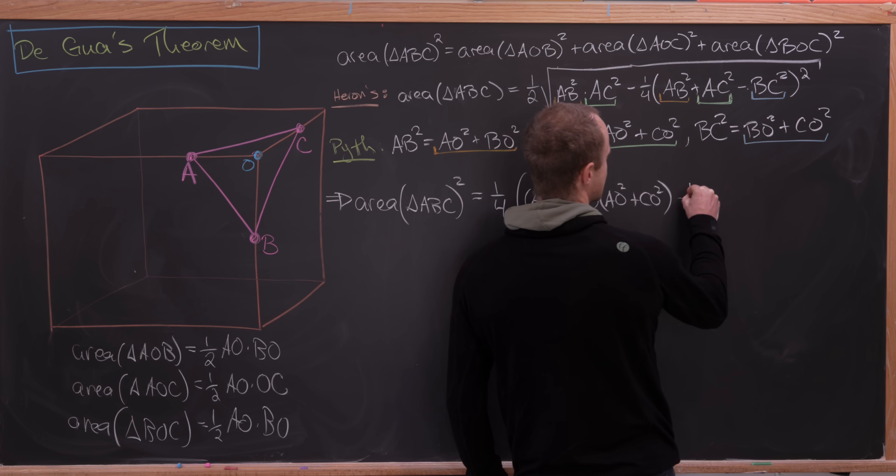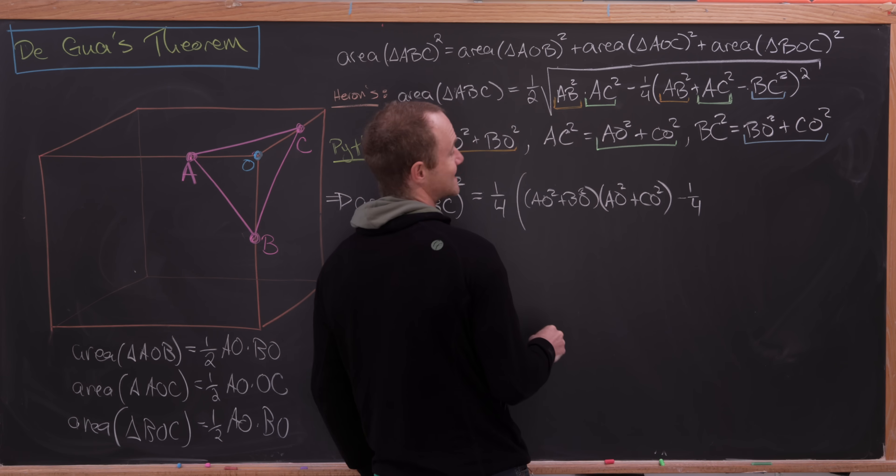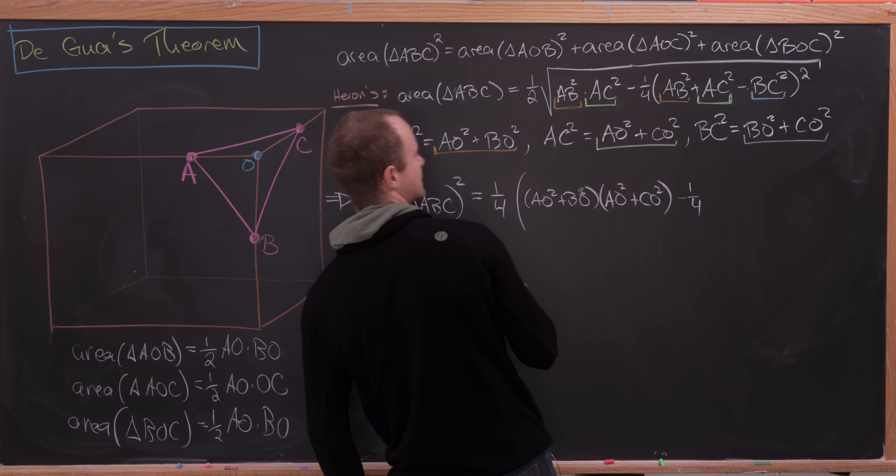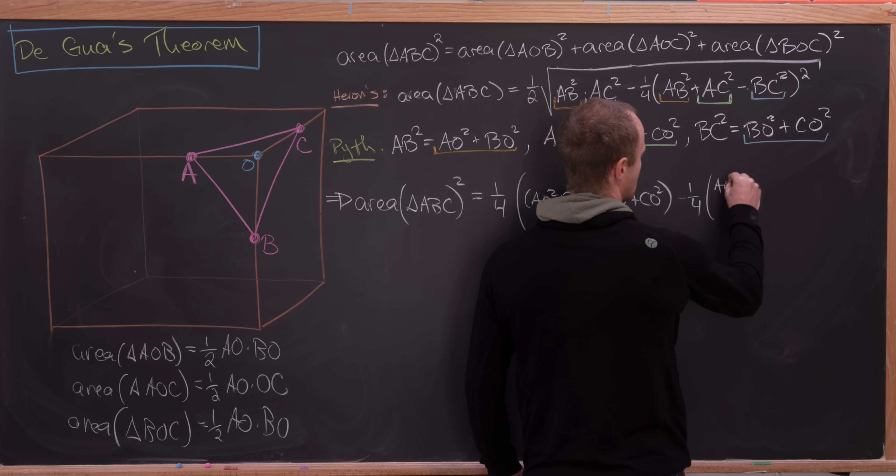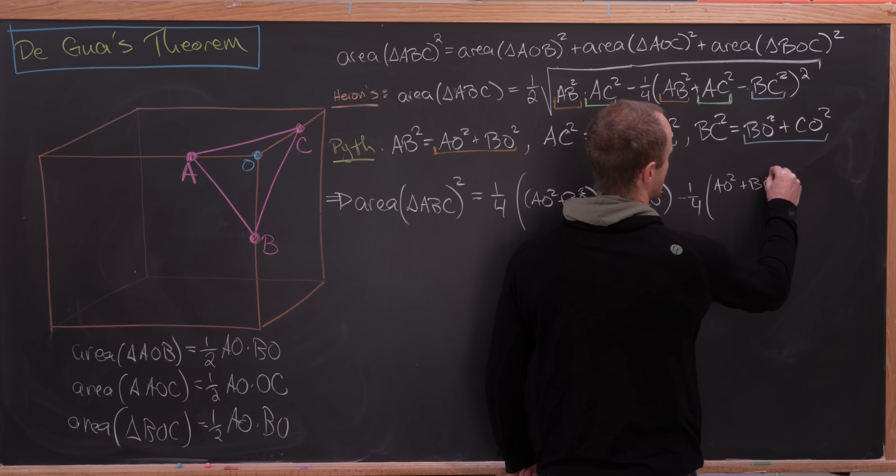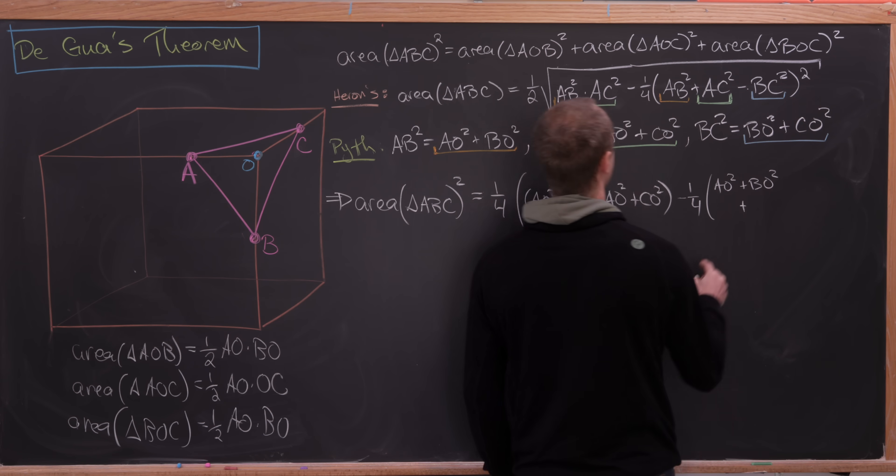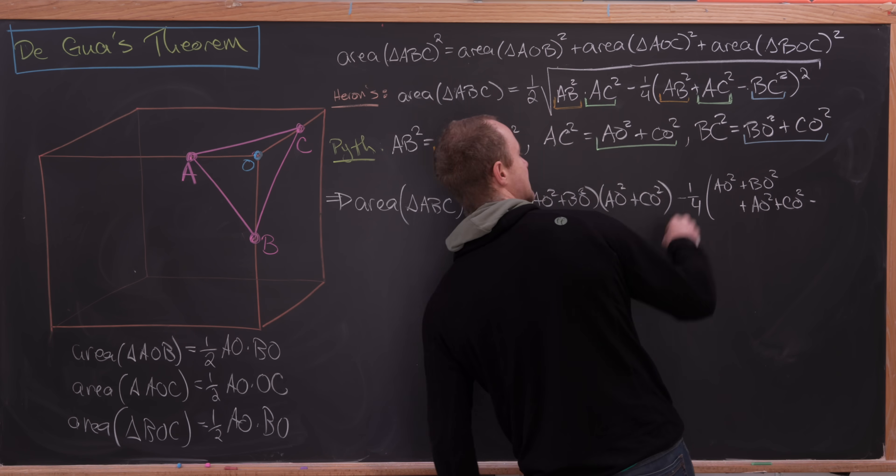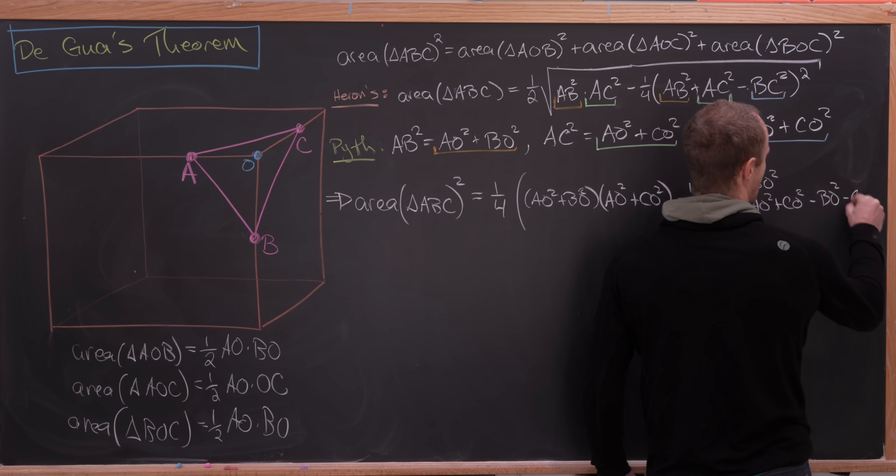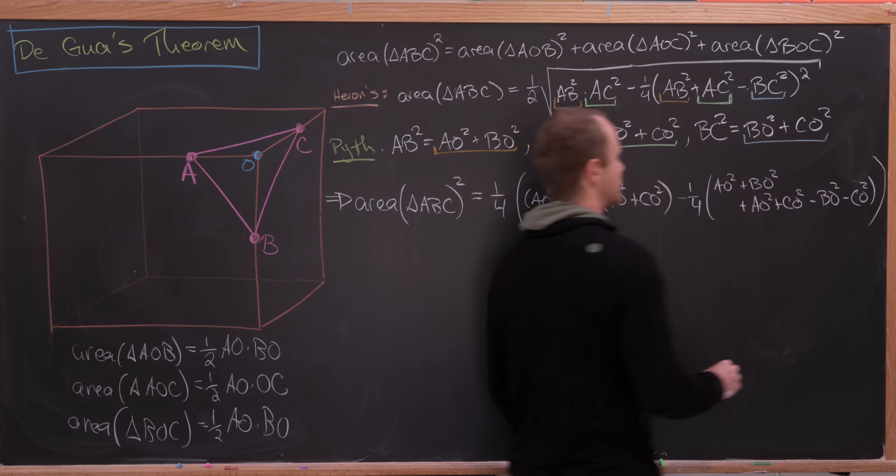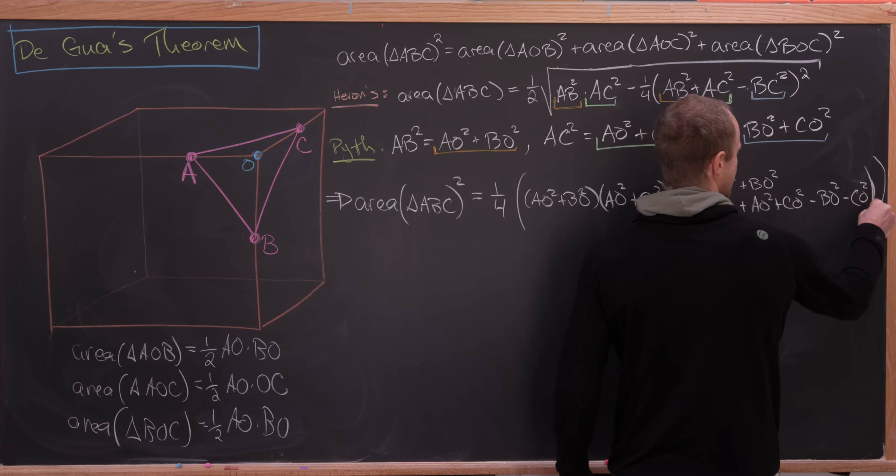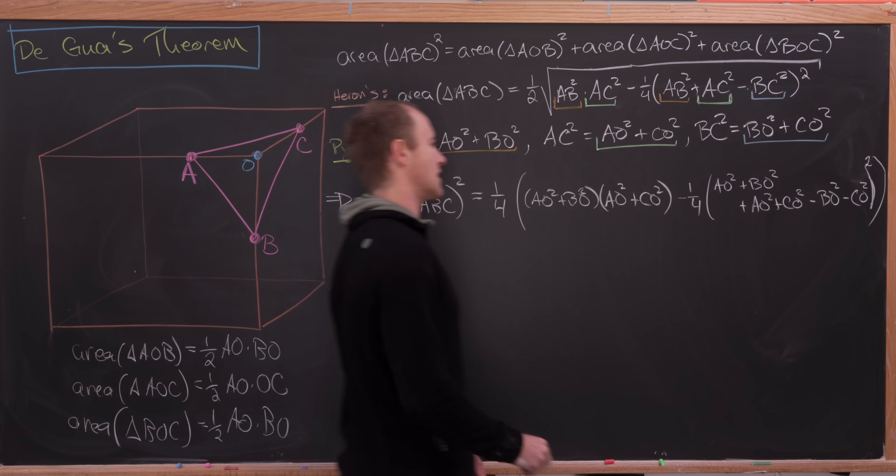And then we'll do minus one quarter times, let's see, we have AB squared, so that's going to be AO squared plus BO squared. And then we'll have plus AC squared, so that's again AO squared plus CO squared minus BC squared. So that'll be minus BO squared minus CO squared after distributing that through. But then all of this is within something squared, so we'll take care of that as well.